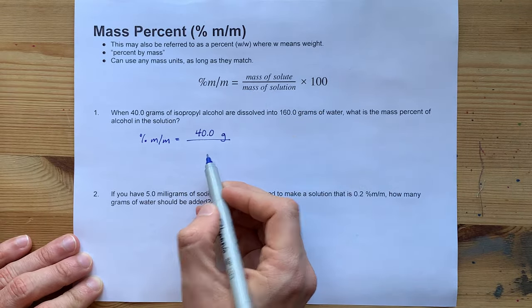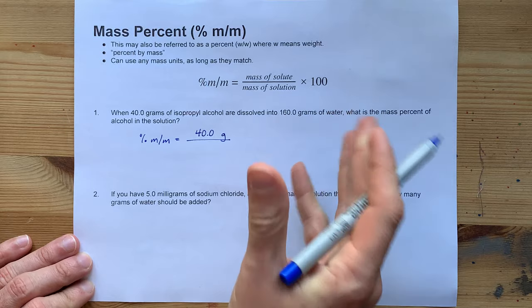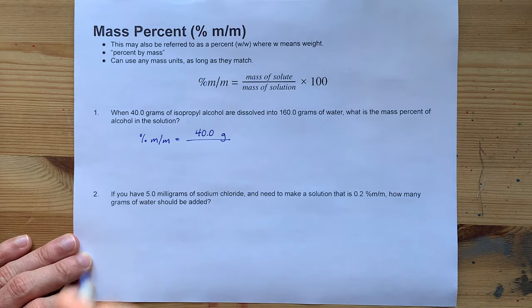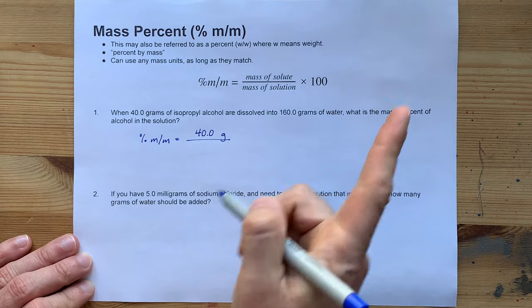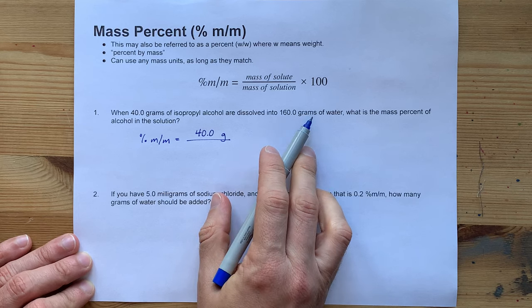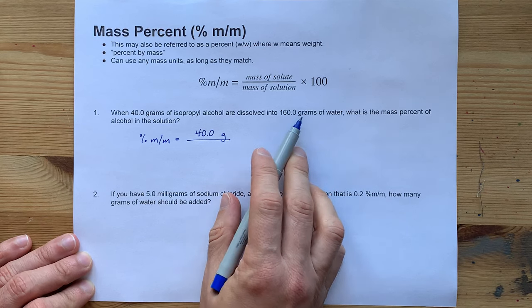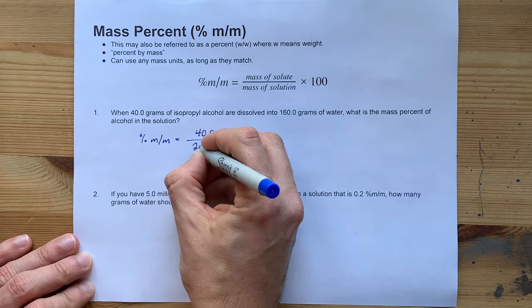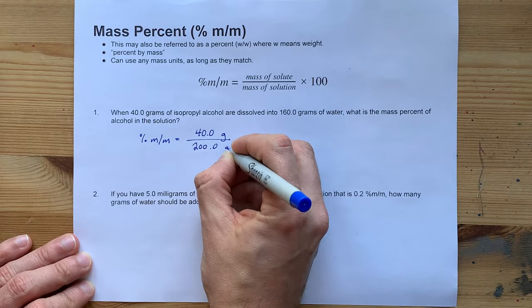And the mass of the solution, that is the combination of both solute and solvent, is 40 plus 160. Look at that trick. The 160 here is just water. And when you combine it with the alcohol, you get 200 grams of solution.